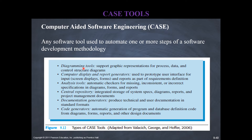CASE tools include diagramming tools for creating logical models or graphical representations of data, report generators for quickly creating interface elements like screen displays or forms, analysis tools, a general repository of modules and objects, documentation generators, tools that can generate a help system based on code, and code generators — software tools that can generate code based on a logical model or flowchart. All of these aim to speed up information system development.